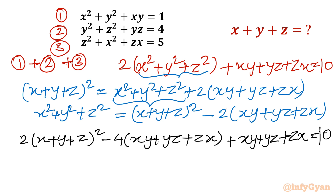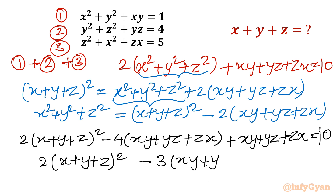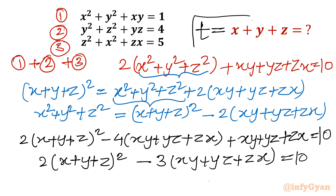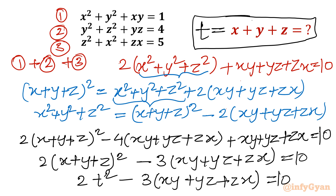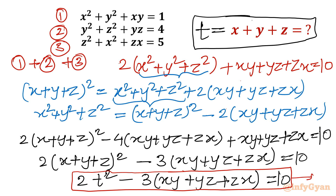Now minus 4 plus 1 gives minus 3. So this becomes 2(x plus y plus z)² minus 3(xy plus yz plus zx) equals 10. Let t equal x plus y plus z, so we have 2t² minus 3(xy plus yz plus zx) equals 10. I will call this equation number 4, and we will use it a little later.